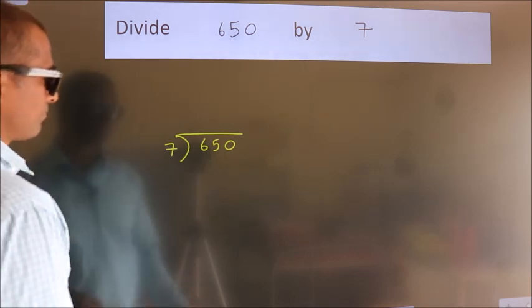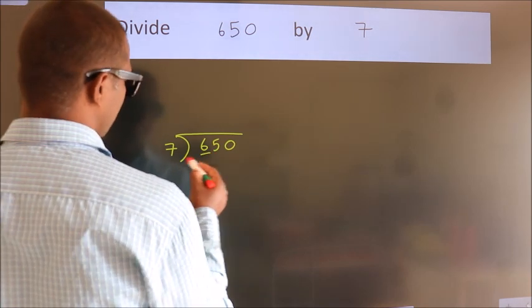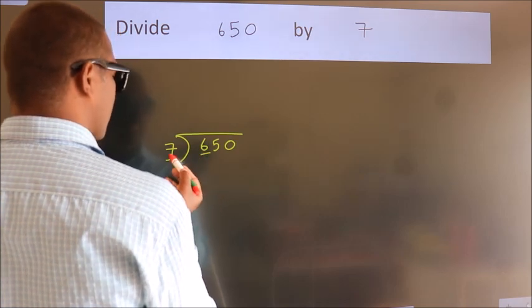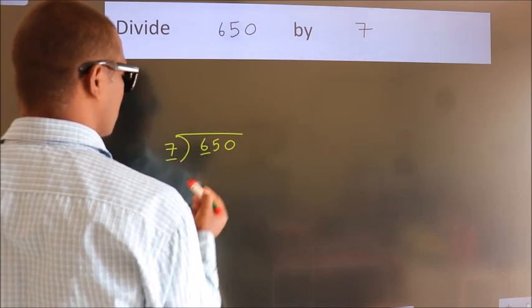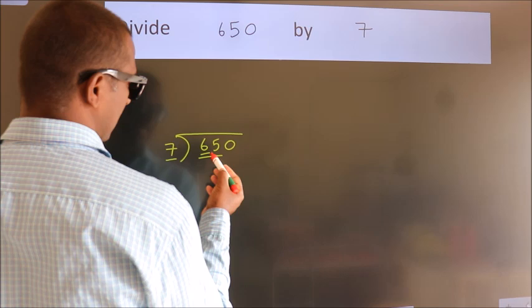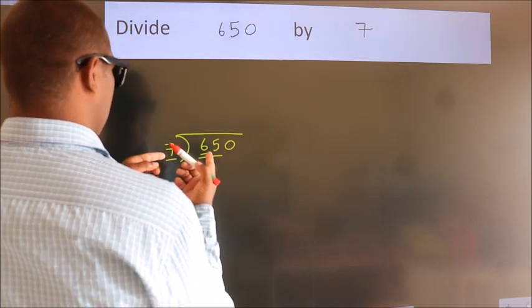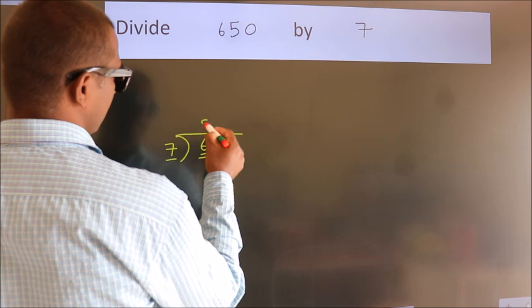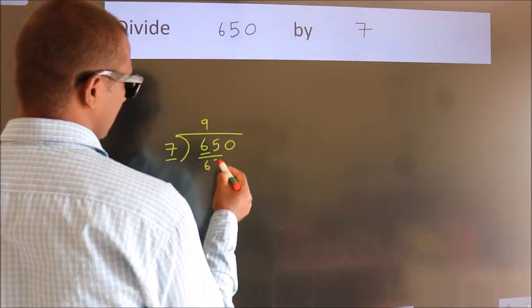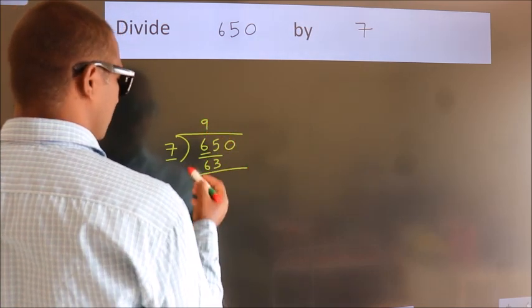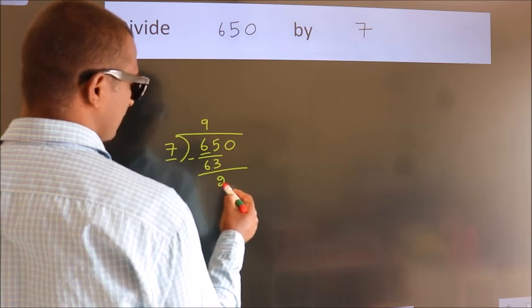Next. Here we have 6, here 7. 6 smaller than 7, so we should take two numbers. 65. A number close to 65 in 7 table is 7 nines 63. Now we should subtract. We get 2.